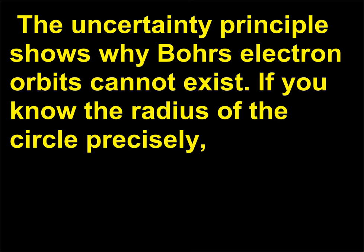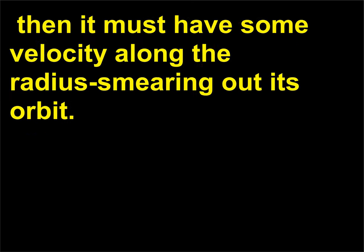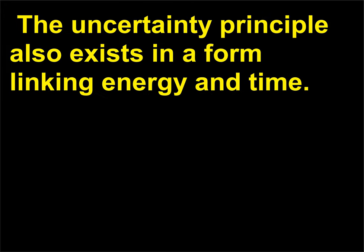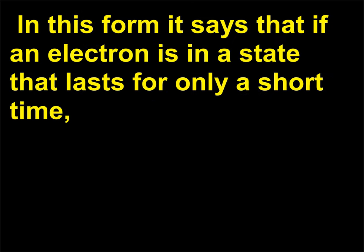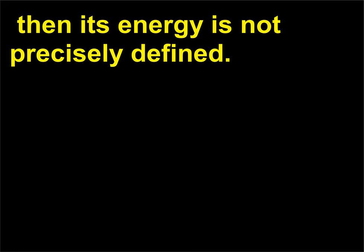The uncertainty principle shows why Bohr's electron orbits cannot exist. If you know the radius of the circle precisely, then it must have some velocity along the radius, smearing out its orbit. The uncertainty principle also exists in a form linking energy and time: if an electron is in a state that lasts for only a short time, then its energy is not precisely defined.